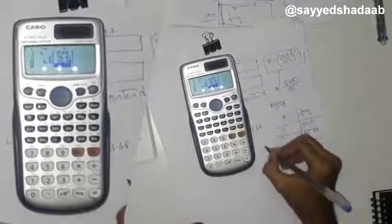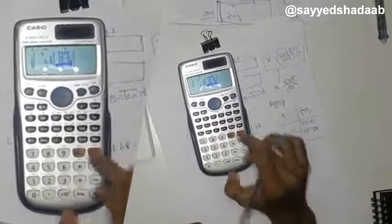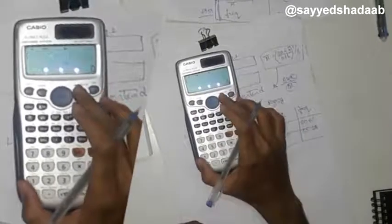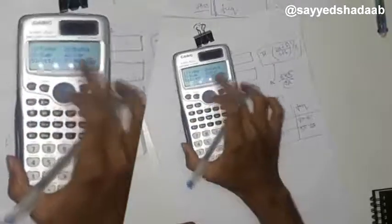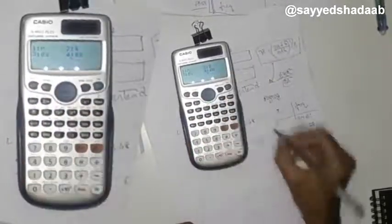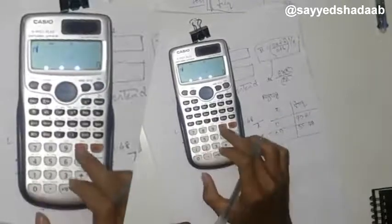Once I have fed this data I will just be pressing the AC button. Now press shift 1, get into the stat mode, then select x bar by pressing 2.